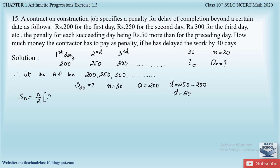We use the sum formula: Sₙ = n/2 × (2a + (n−1) × d), since the last term is not given in the question. Substituting: S₃₀ = 30/2 × (2 × 200 + (30−1) × 50).